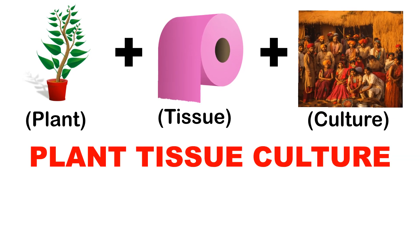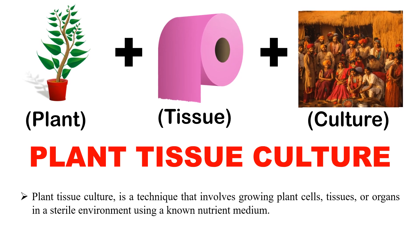The answer is plant tissue culture — the first emoji represents plant, the second tissue, and the third culture. Plant tissue culture is a technique in which we grow plants under aseptic conditions in the lab.